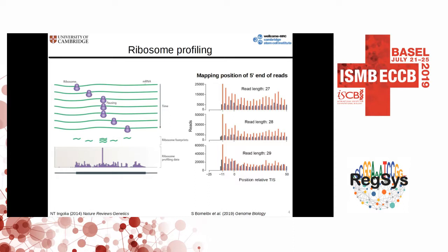If we look at the mapping position of the 5' end of the reads, we can see that they map preferentially at every third nucleotide of the genome. This is showing mapping position relative to the start site, and this 3-nucleotide periodicity allows us, with single codon resolution, to see where the ribosome is translating at the moment.